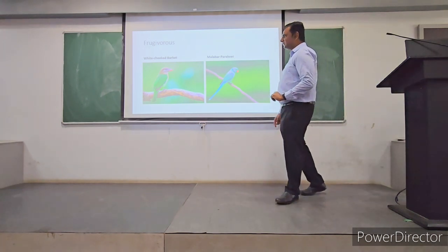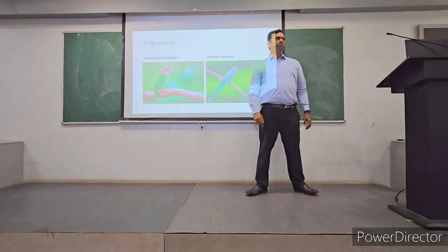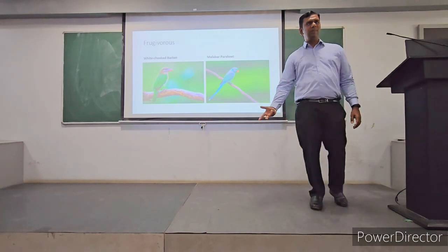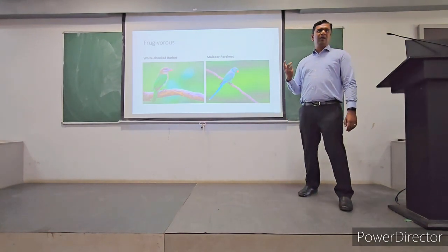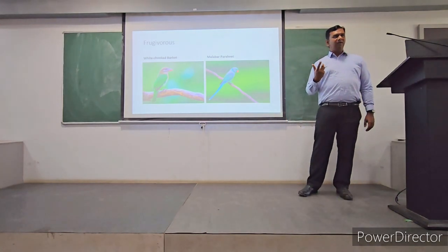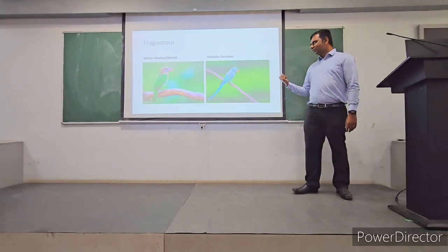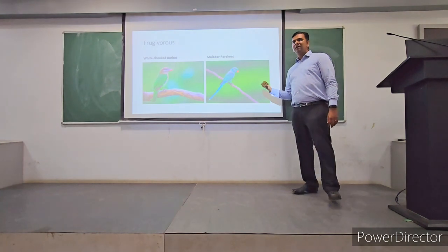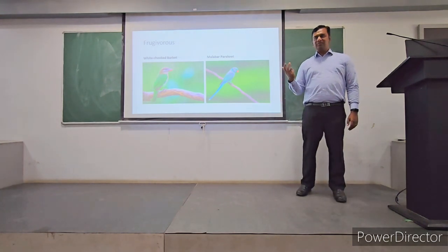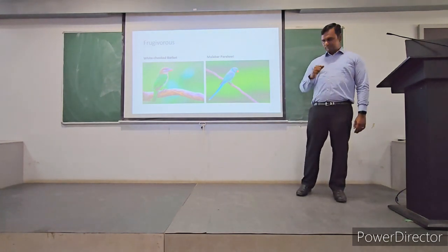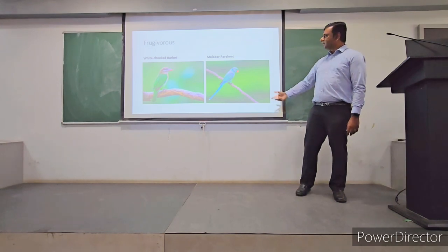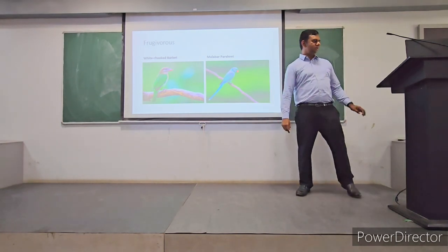Frugivorous birds: white-cheeked barbet, coppersmith typically eats fig fruits. Malabar parakeet - these also eat fruits like apples, cherries, plums. So all these birds love these fruits.